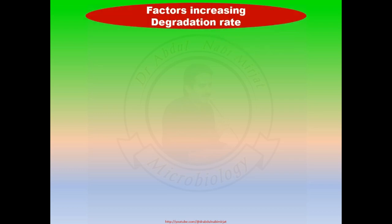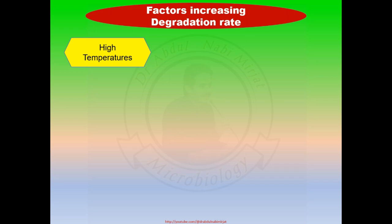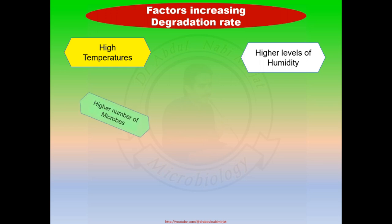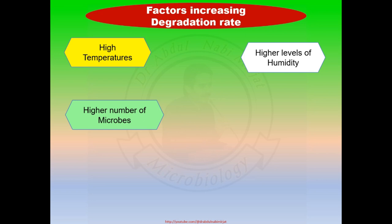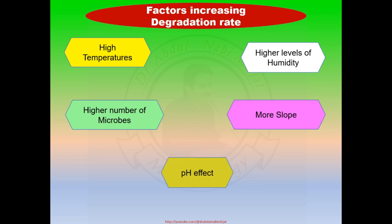Factors increasing degradation rate: High temperature is involved in faster degradation. Higher levels of humidity also result in faster degradation of pesticides. A higher number of microbes also causes faster degradation of pesticides. More slow flow will cause more runoff. The pH effect depends on the chemical structure of a pesticide.